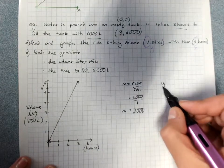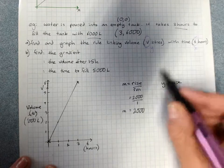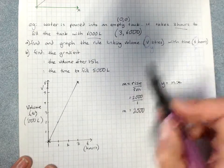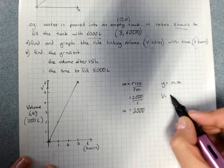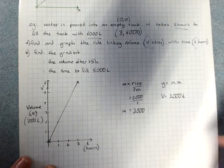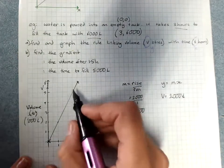Your line is going to be y equals mx. We need to substitute in V, T, and our gradient. Volume is 2,000 times time. That's our rule. Put it on the graph.